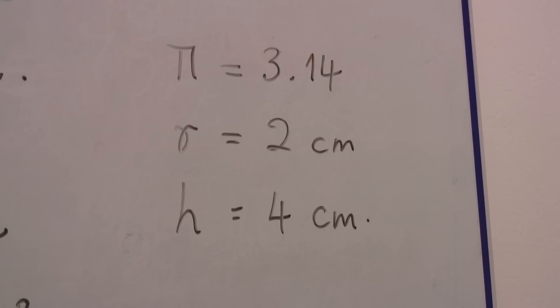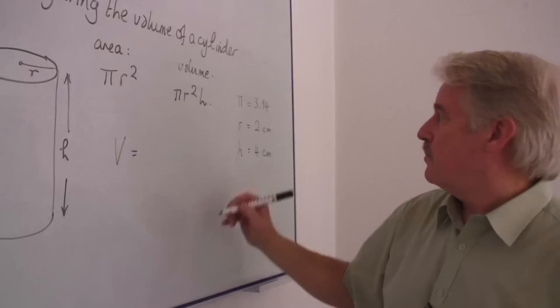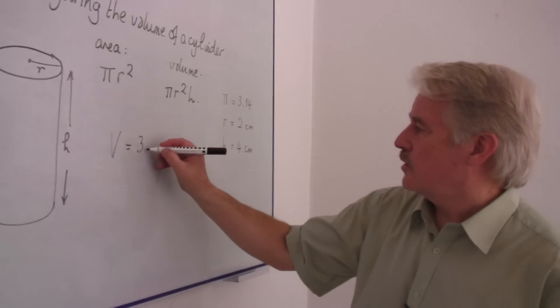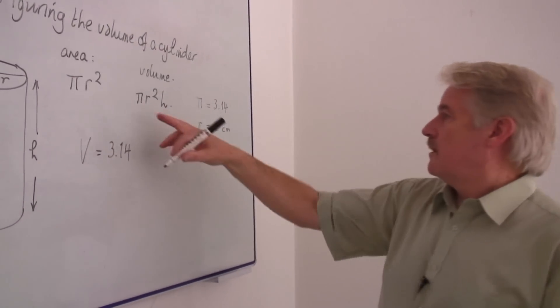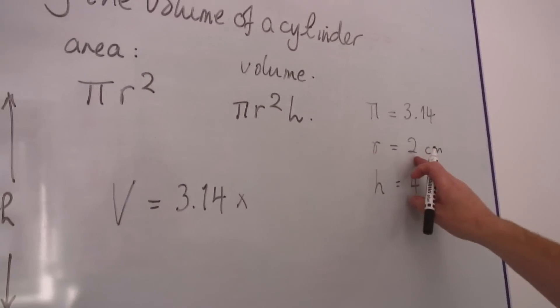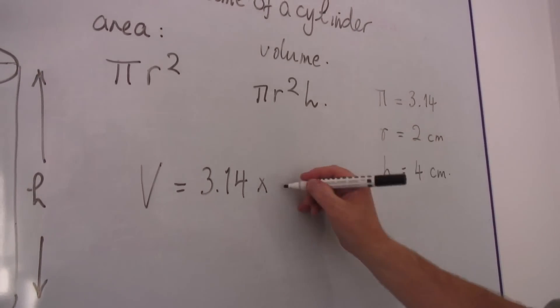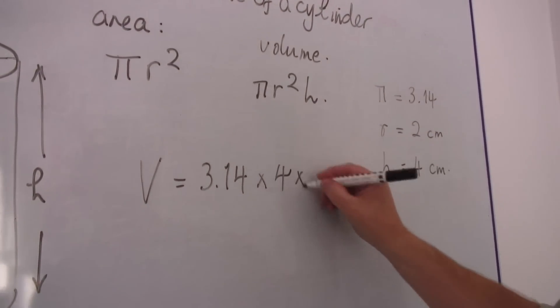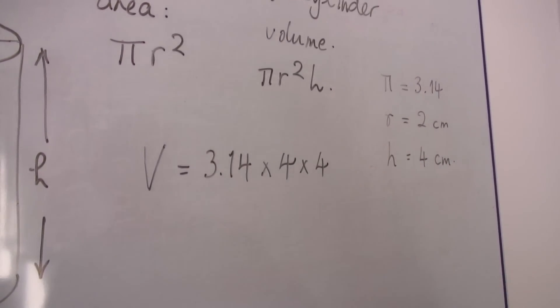Then what we will find is that the volume v is equal to pi 3.14 multiplied by r squared, the radius squared. The radius is 2 so r squared is 2 times 2 which is 4 and we multiply by the height which is 4 also.